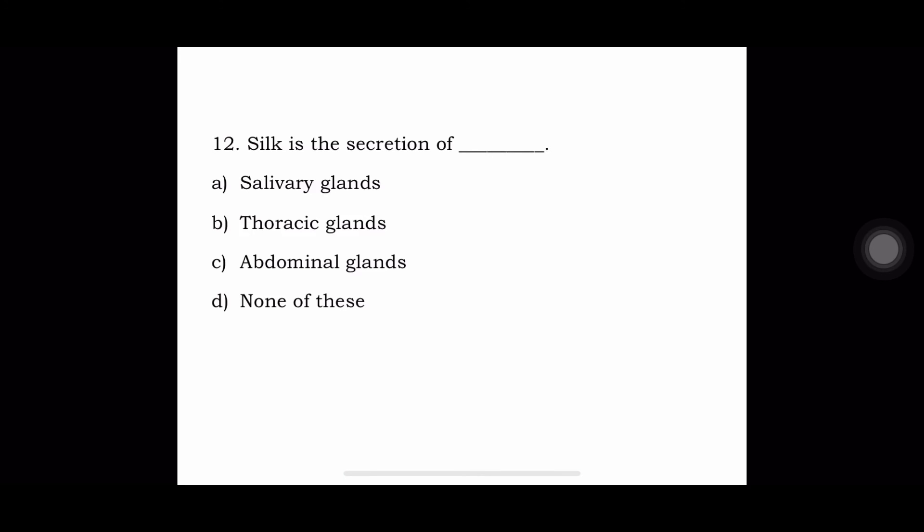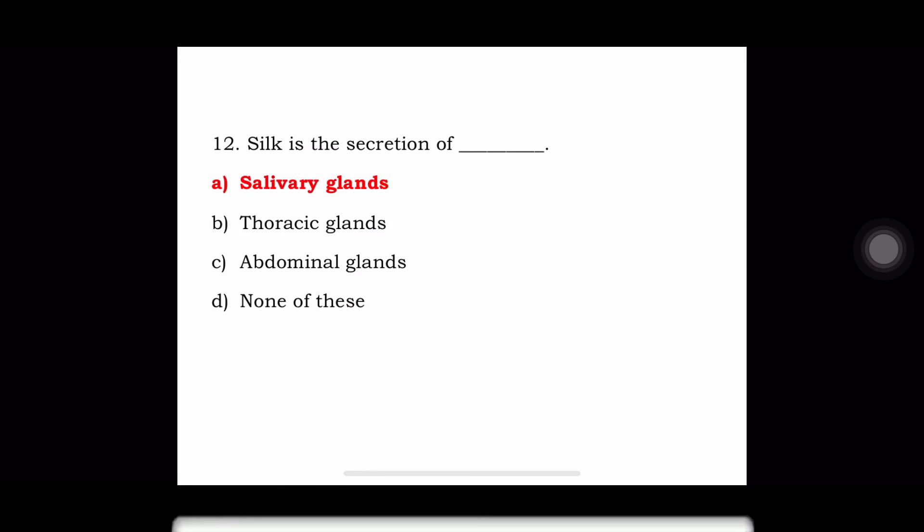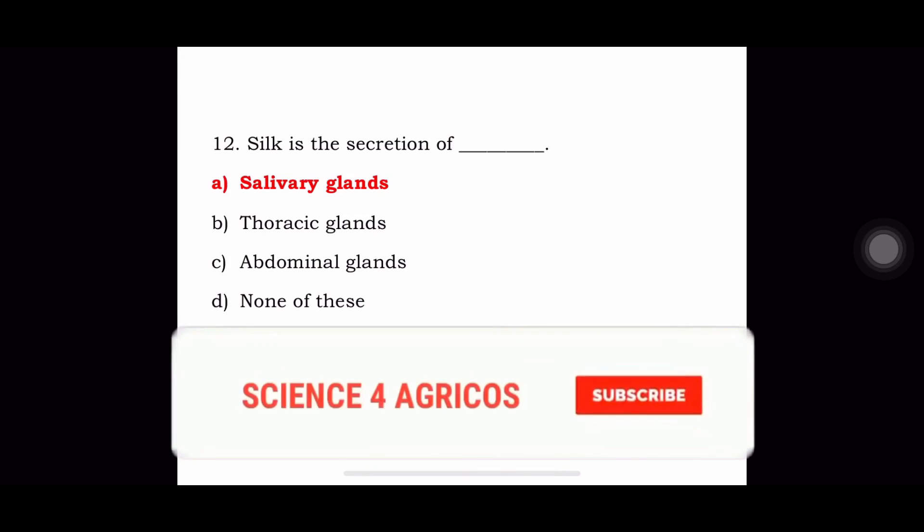Next question: Silk is the secretion of — A. Salivary glands, B. Thoracic glands, C. Abdominal glands, or D. None of these. The answer is salivary glands.